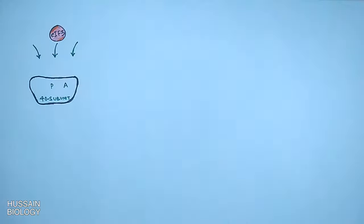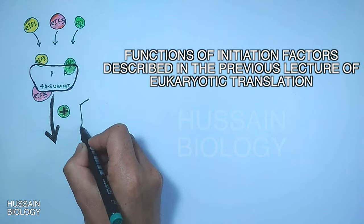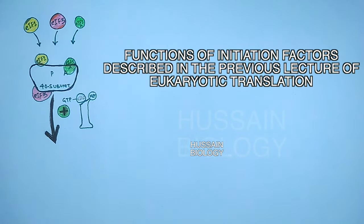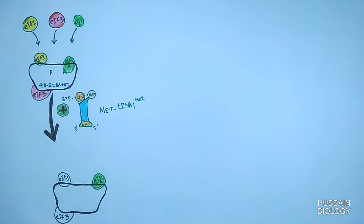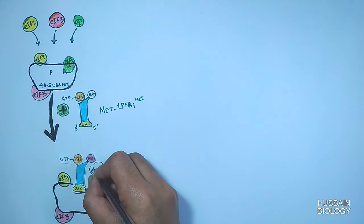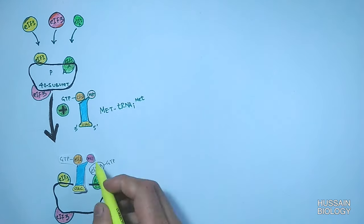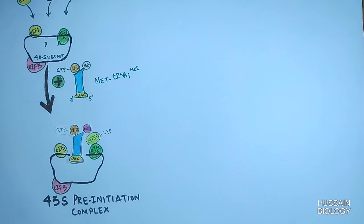To initiate translation, three initiation factors first bind the 40S subunit: eIF3, eIF1A, and eIF1, as shown in the diagram. Then the initiator tRNA — tRNA charged with methionine, termed Met-tRNAiMet — is recruited by initiation factor eIF2 towards the 40S subunit and enters at the P site directly. eIF2 is GTP-bound. Another factor, eIF5B, also a GTP-bound factor, binds here as well.